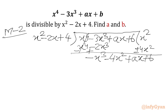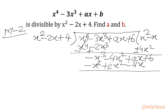Next we multiply minus x by the divisor: minus x times (x² minus 2x plus 4) gives minus x³ plus 2x² minus 4x. After subtracting and changing signs, minus x³ cancels out and we are left with minus 6x² plus (a plus 4)x plus b.